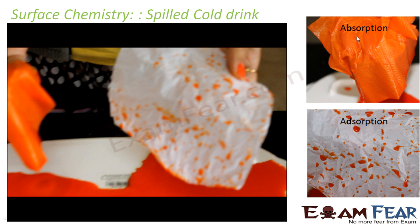There is a difference between absorption and adsorption. On the right-hand side, the cold drink is only on the surface of the plastic — it didn't go inside. Even with normal writing paper, the cold drink will not be absorbed properly; it will remain on the surface. But if you use tissue paper or a piece of cloth, the whole cold drink will be totally absorbed. This is a good example of adsorption and absorption — with adsorption, everything is happening on the surface. That's all there is to surface chemistry.